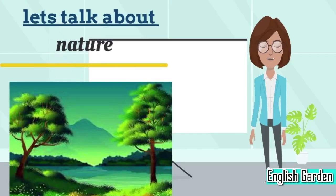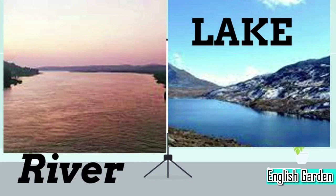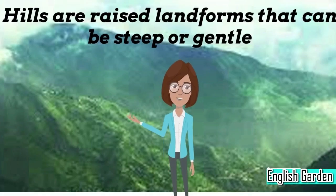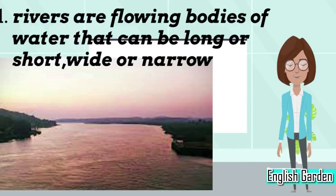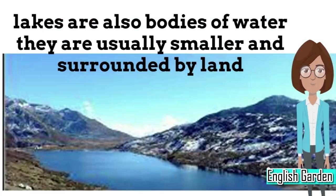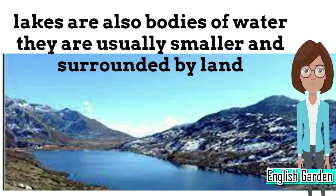Now let's talk about nature. Nature is all around us, and it includes things like hills, trees, rivers, and lakes. Hills are raised landforms that can be steep or gentle. Trees are tall plants that have trunks, branches, and leaves. Rivers are flowing bodies of water that can be long or short, wide or narrow. Lakes are also bodies of water, but they are usually smaller and surrounded by land.